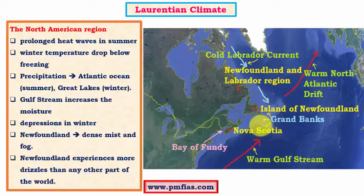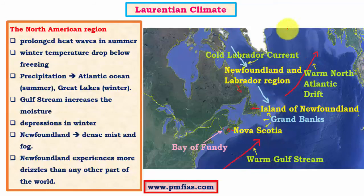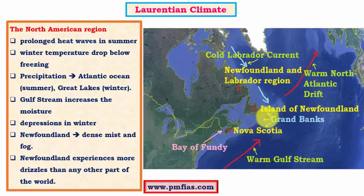The climatic conditions here are highly influenced by ocean currents. The warm Gulf Stream flows as the North Atlantic Drift towards Norway, while cold currents like the Labrador Current and Greenland Current mix with the warm Gulf Stream at Grand Banks, part of Newfoundland Island in Canada. This convergence of oceanic currents leads to mixing of cold and warm waters — also called upwelling — which creates foggy conditions due to temperature inversion. This foggy weather brings good amounts of drizzle to Newfoundland.